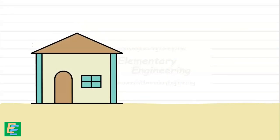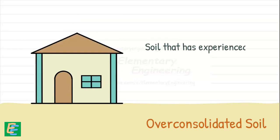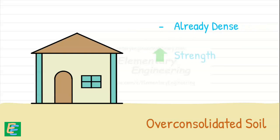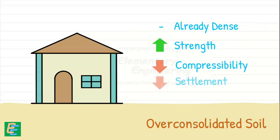It is generally better if we construct our structure on overconsolidated soil—that means on a soil that has experienced a greater stress in its past than the stress we are going to subject it with our structure's load. Overconsolidated soil will already be denser, have higher strength and lower compressibility. Hence it will experience lower settlement.